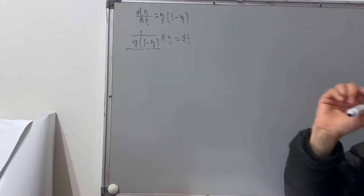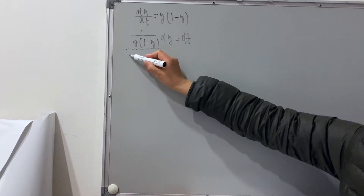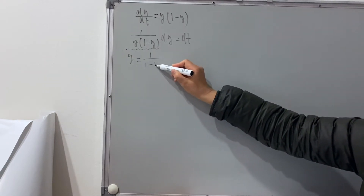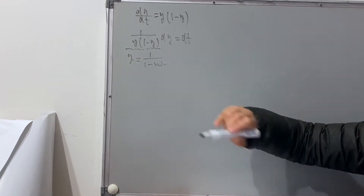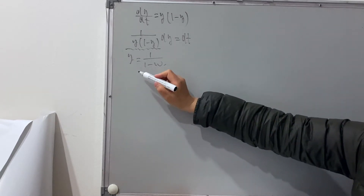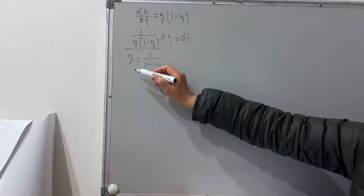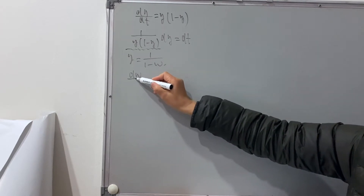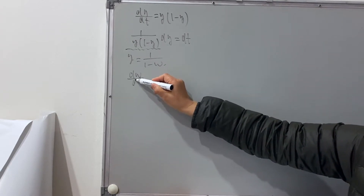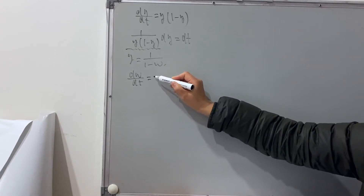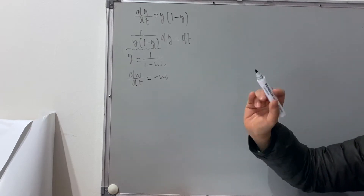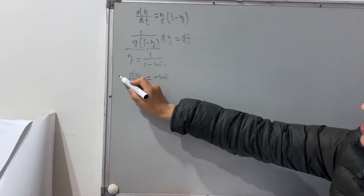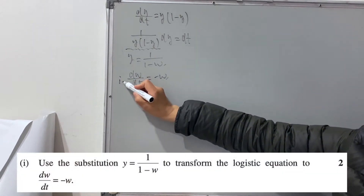But with the substitution given y equals to 1 over (1 minus w), we can easily change the original differential equation into the new differential equation as dw/dt will become just equal to negative w. The integration will become so much easier. So that's the first question — they ask us to show that.